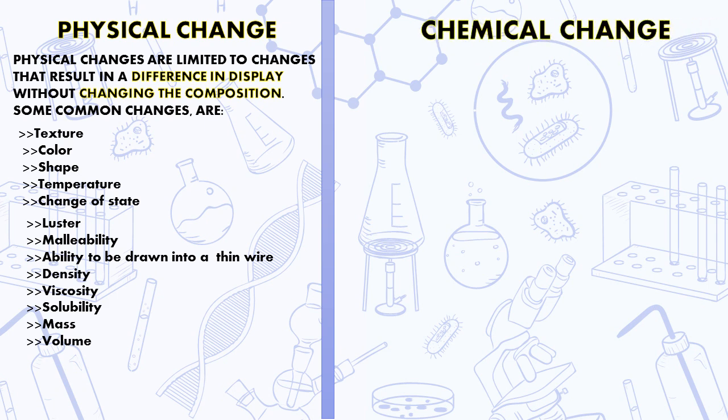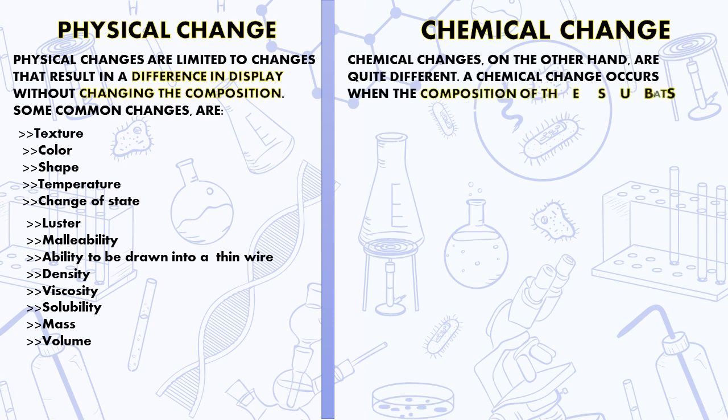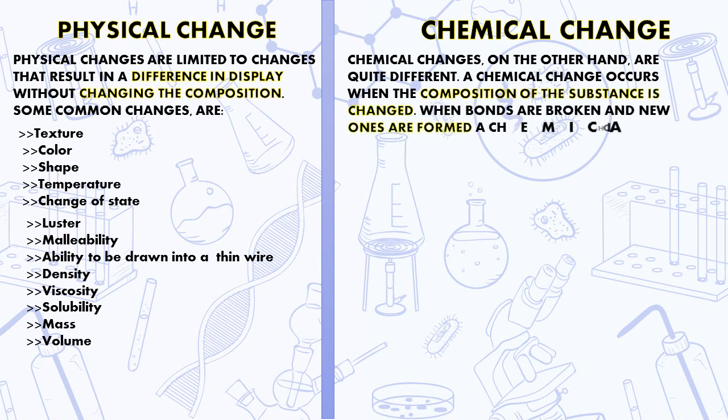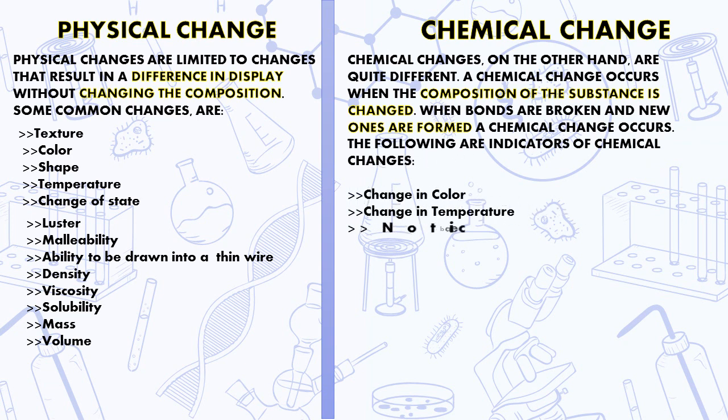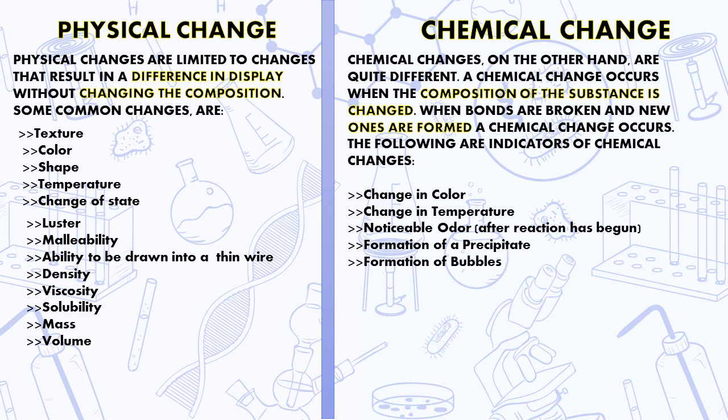Or it could be a chemical change. A chemical change on the other hand is quite different. A chemical change occurs when the composition of the substance is changed, when bonds are broken and new bonds are formed. A chemical change occurs when there is a change in color, change in temperature, noticeable odor after reaction has begun, formation of precipitates, and formation of bubbles.